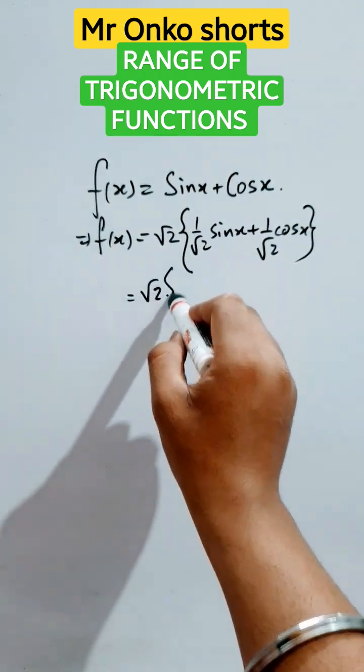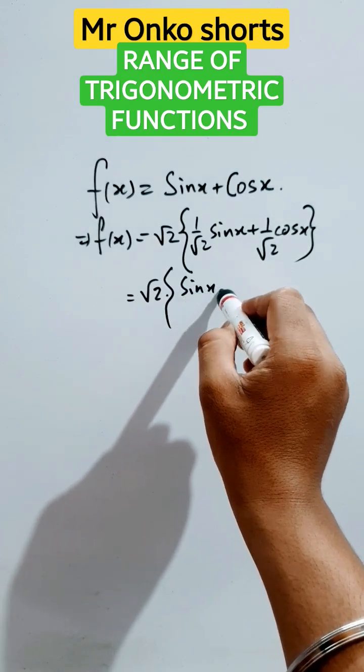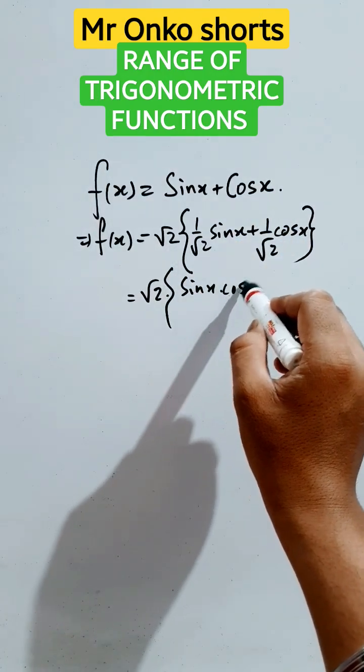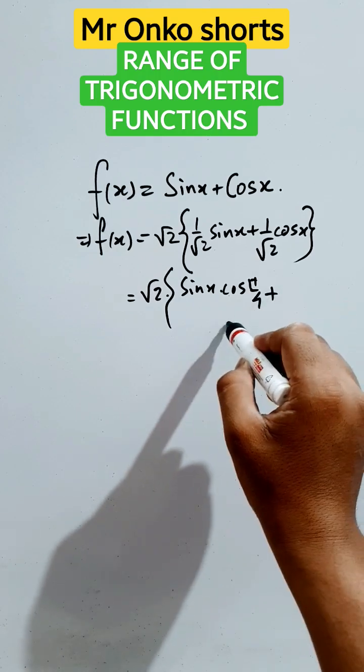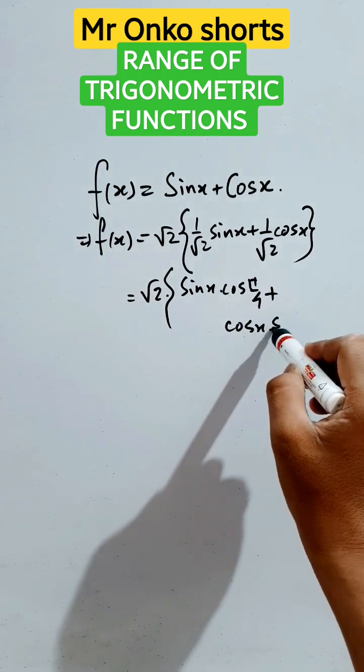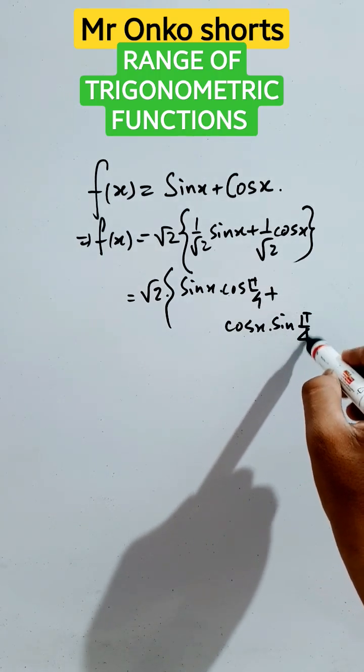So it will be root two into this can be written as sine x into one by root two will be written as cos of pi by four plus cos x into this will be written as sine of pi by four.